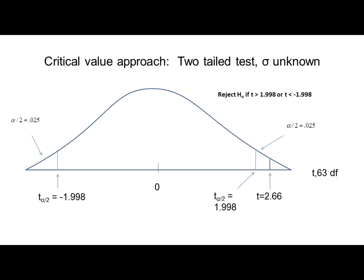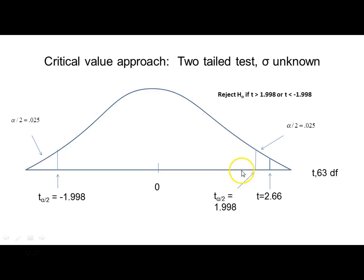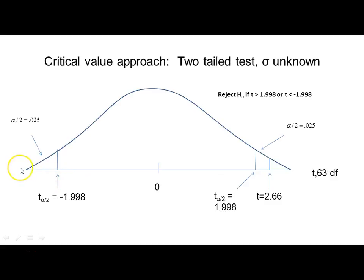Looking at this graphically: the sample size was 64, so we look at a T distribution with n minus 1, or 63 degrees of freedom. With a 5% level of significance, we find the two T values that leave 0.025 in each end of the distribution. In the upper end that's 1.998, and by symmetry in the lower end it's negative 1.998. We reject the null hypothesis for a T value above 1.998 or below negative 1.998. Our calculated T of 2.66 does fall into the rejection area, so we reject the null.